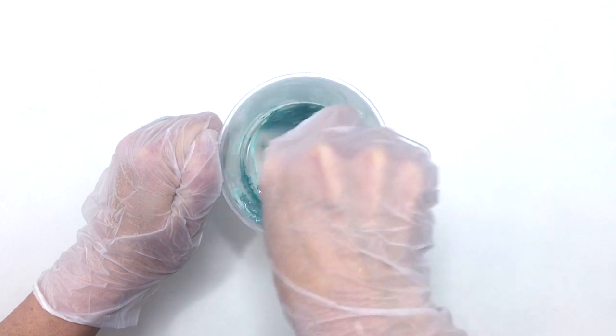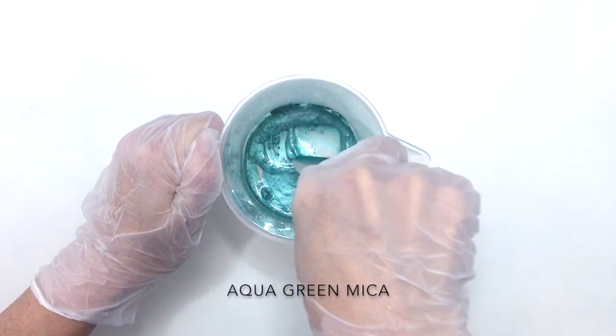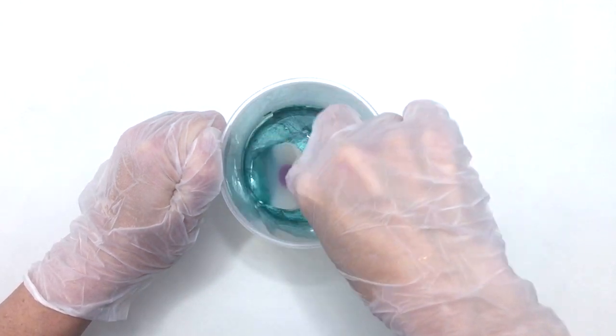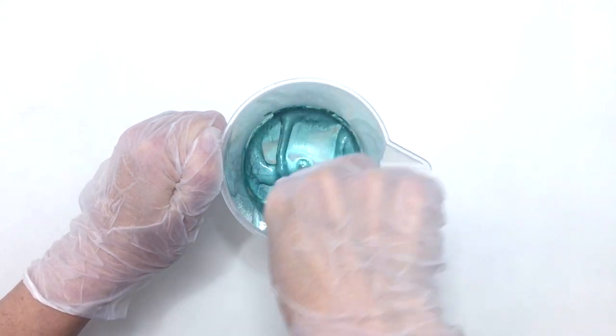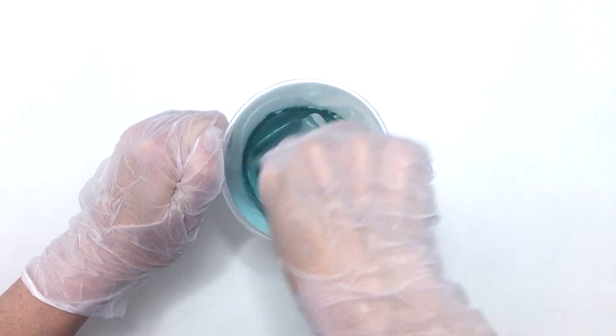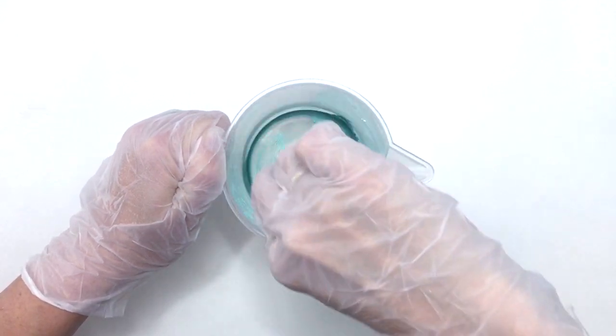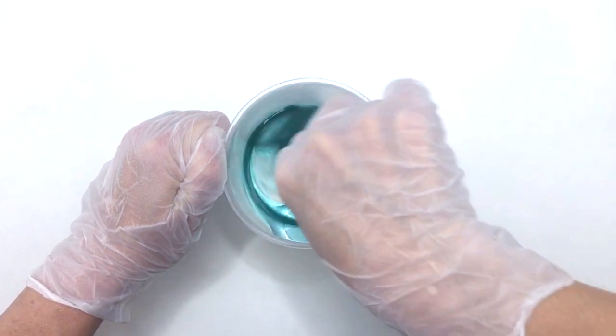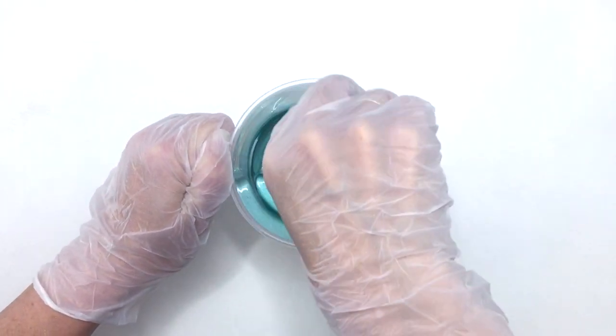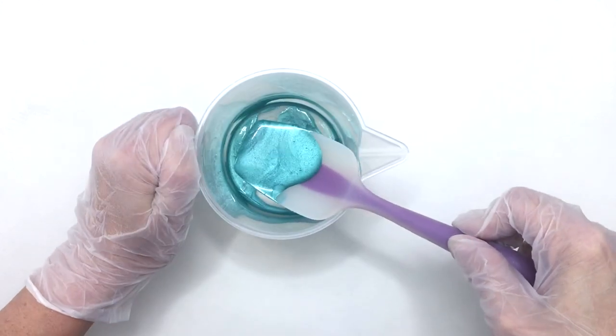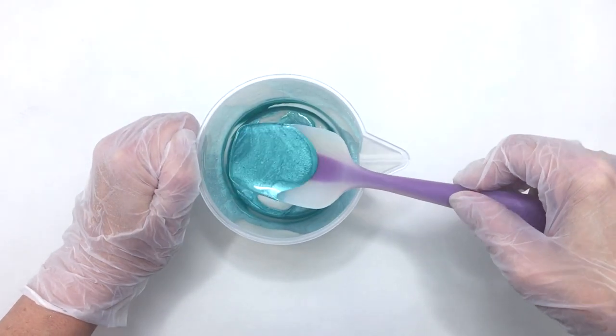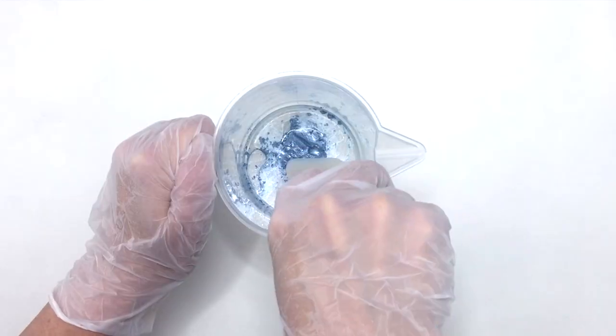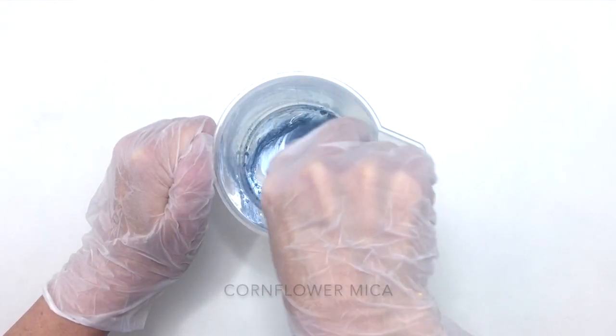I'll use aqua green mica for the water. I'm using cornflower mica for the sky.